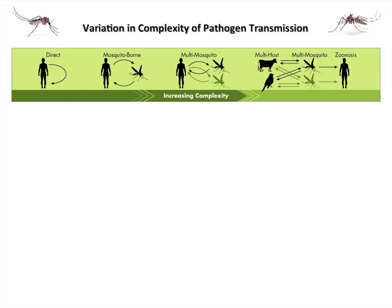This slide is really going to be a summary of the things I'm going to talk about. Starting at the top, this is increasing complexity in a disease transmission system, beginning with direct transmission — from one person to another, like influenza or measles. Then we get into systems where there's an arthropod vector, like a mosquito. Adding that mosquito to the cycle is not like just adding another step to transmission; it makes the whole system much more complicated. The mosquito brings its own ecology and its own biology to the system.